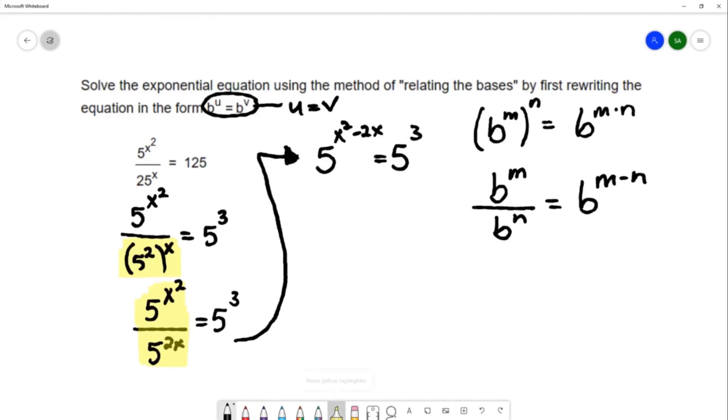So I'm finally at the point that was described in the directions of this problem, where we have the base being the same on both sides. I'm able to simplify this equation by saying that the exponents must be equal to each other. The bases are the same, so the exponent on the left must equal the exponent on the right. That gives x squared minus 2x equals 3.